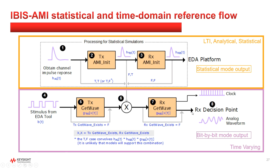The next simulation mode is bit-by-bit, or time-varying mode. The process still starts at step 1 with the channel impulse response, but progresses to step 6 where it's convolved with the stimulus plus the transmitter get-wave response, and then finally to step 7 where the receiver get-wave will provide final waveform processing. The output of the bit-by-bit mode is a data waveform plus sampling point information in the form of a clock time signal, from which the EDA simulation tool can directly output waveforms or construct eye diagrams and bit error rate results.